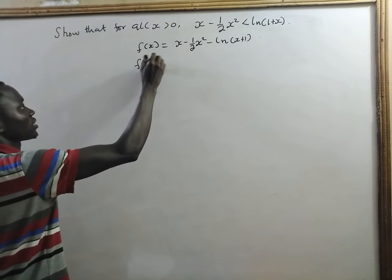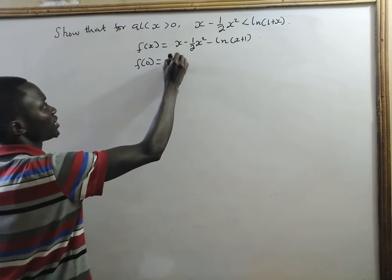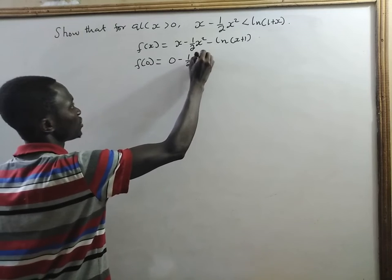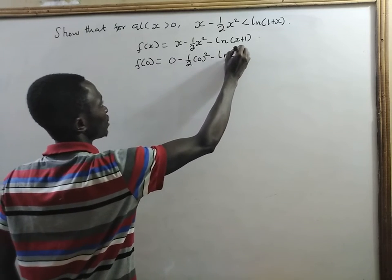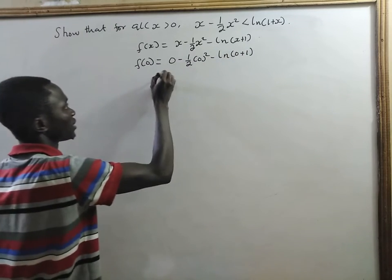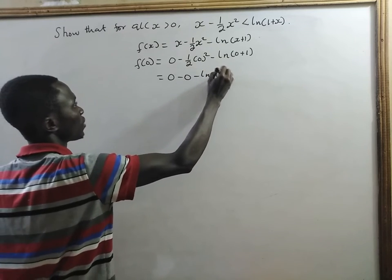Now, let's find f(0). That will give me 0 minus half of 0 squared minus natural log of 0 plus 1. That will give me 0 minus 0 minus natural log of 1.